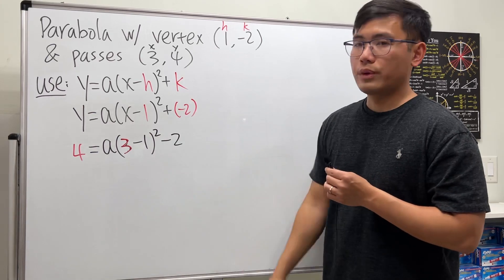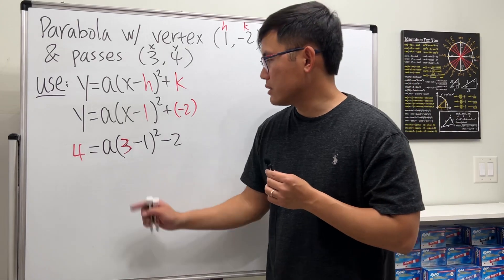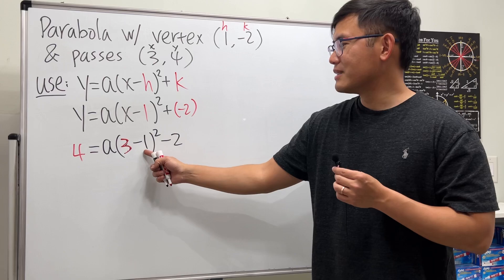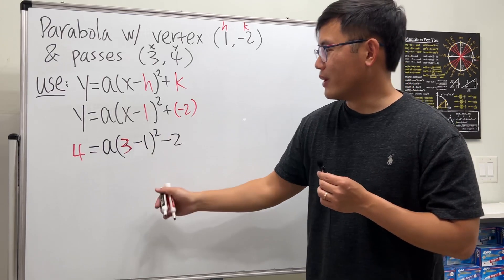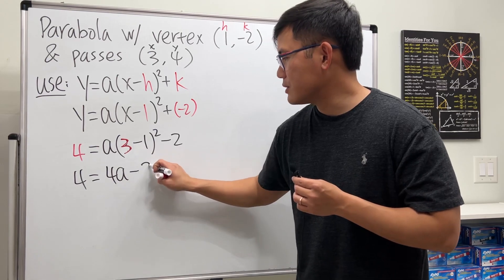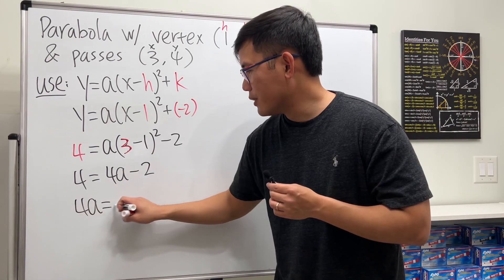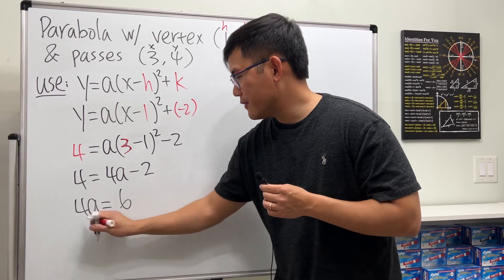And now we just have to solve it. So let's see what we can do with this. 3 minus 1 is 2, 2 squared is 4, so this is 4 equals 4a minus 2. Add the 2 on both sides, we get 4a equals 6. Divide the 4 on both sides.